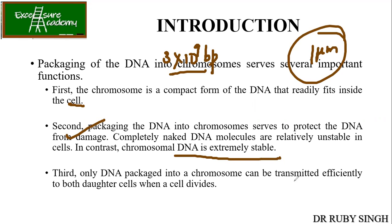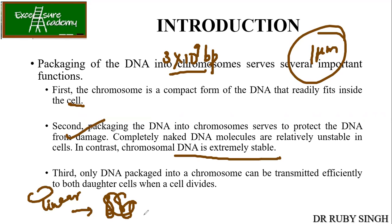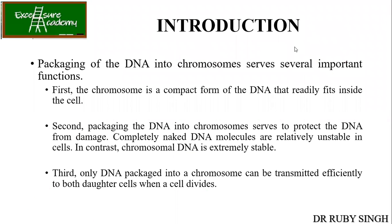Only DNA packaged into chromosomes can be transmitted efficiently to both daughter cells when a cell divides. Just imagine if the chromosome formation system was not there and the DNA was completely open — entangled DNA could not be equally distributed to both daughter cells. This is how you can appreciate how nature has arranged everything, setting the rules so that DNA can be efficiently transmitted to both cells equally.